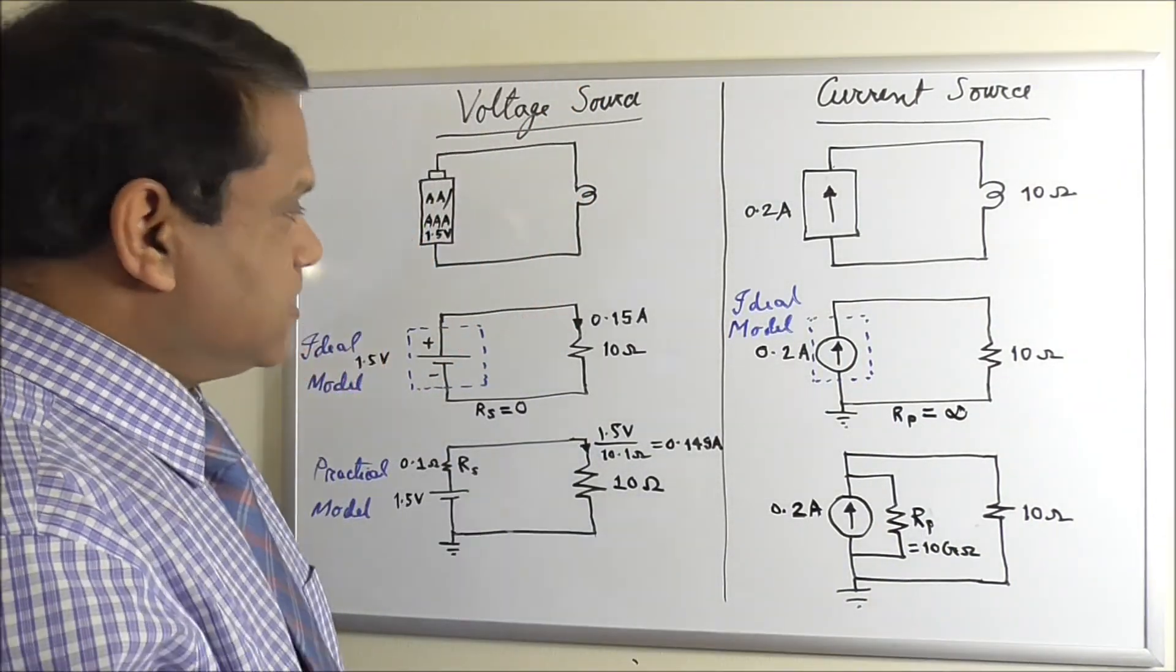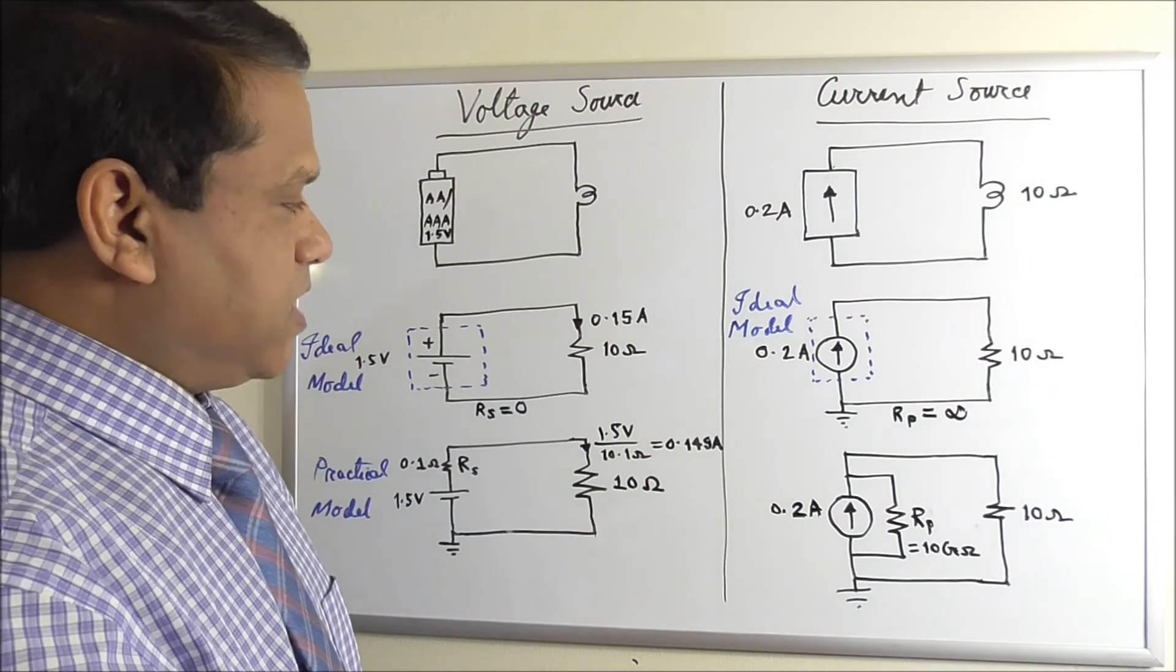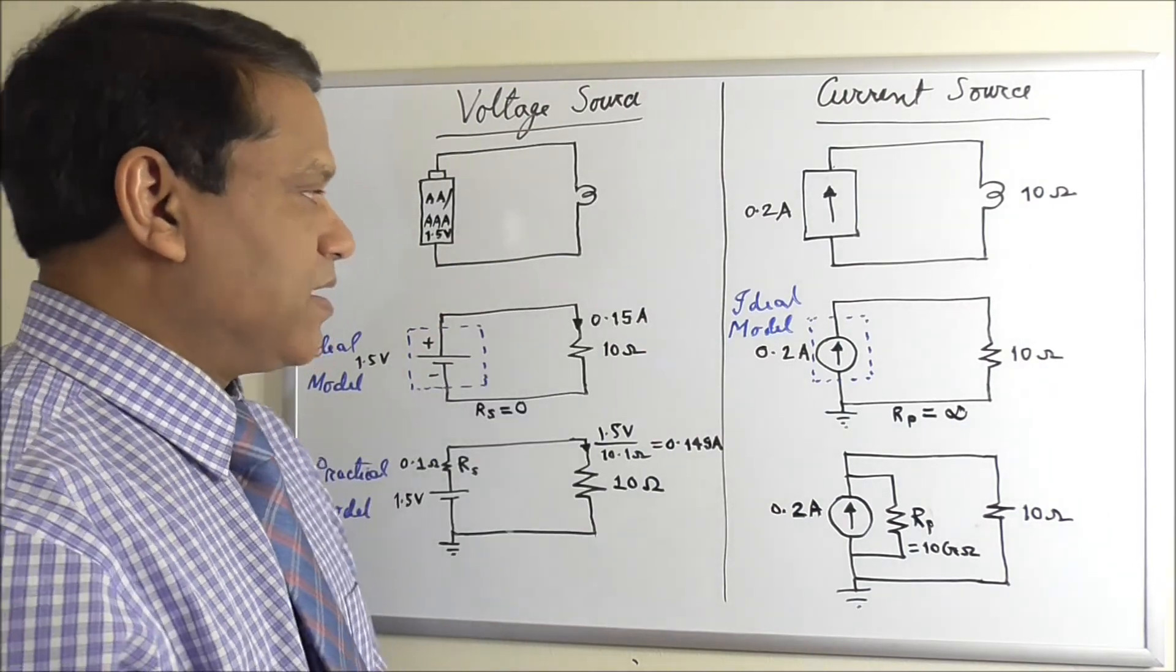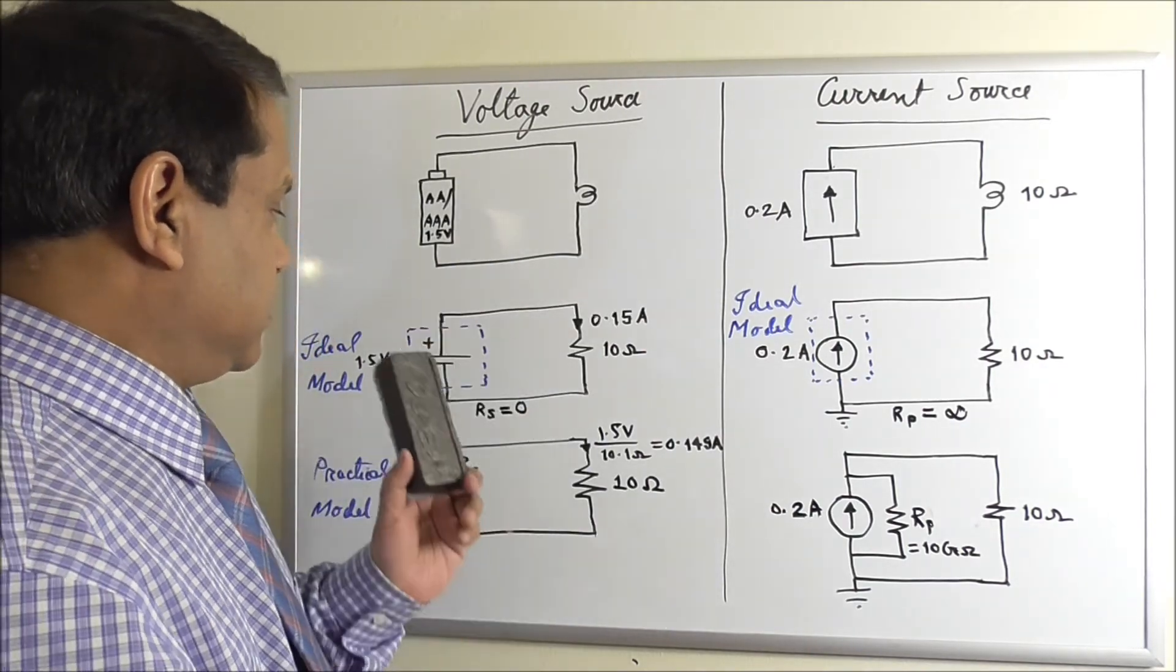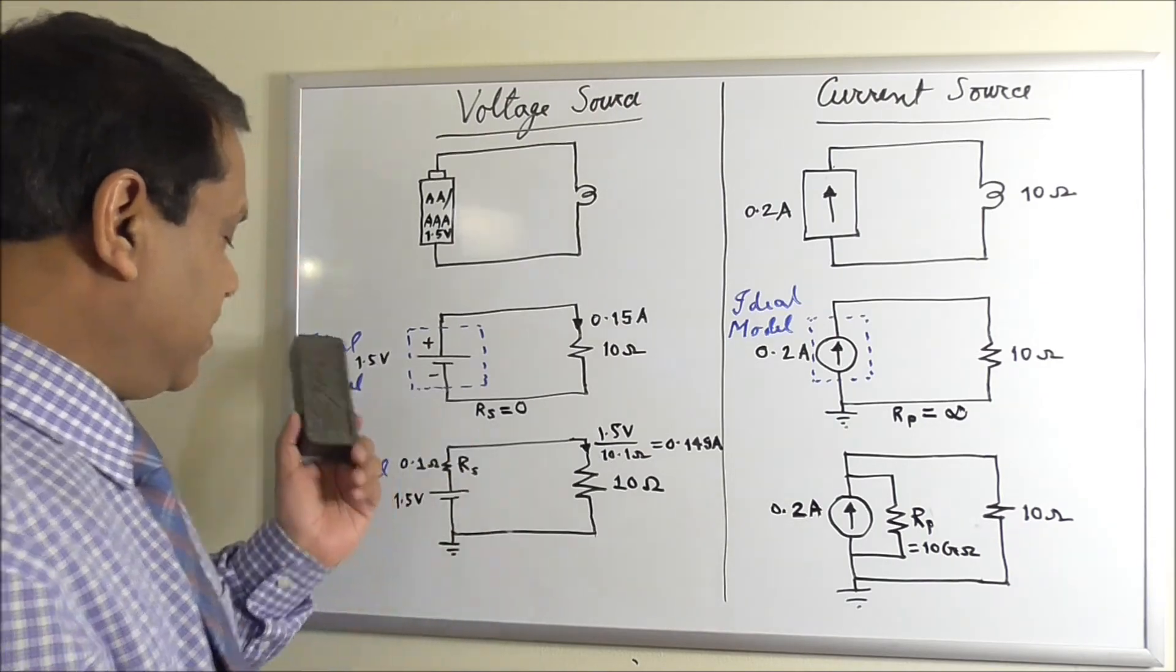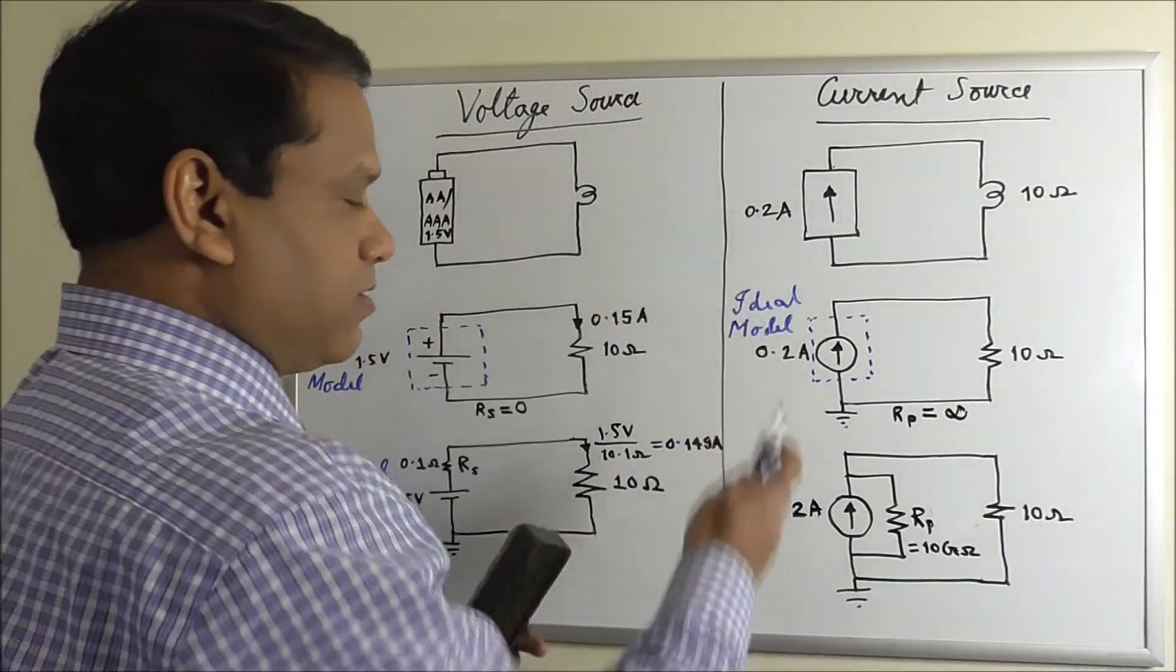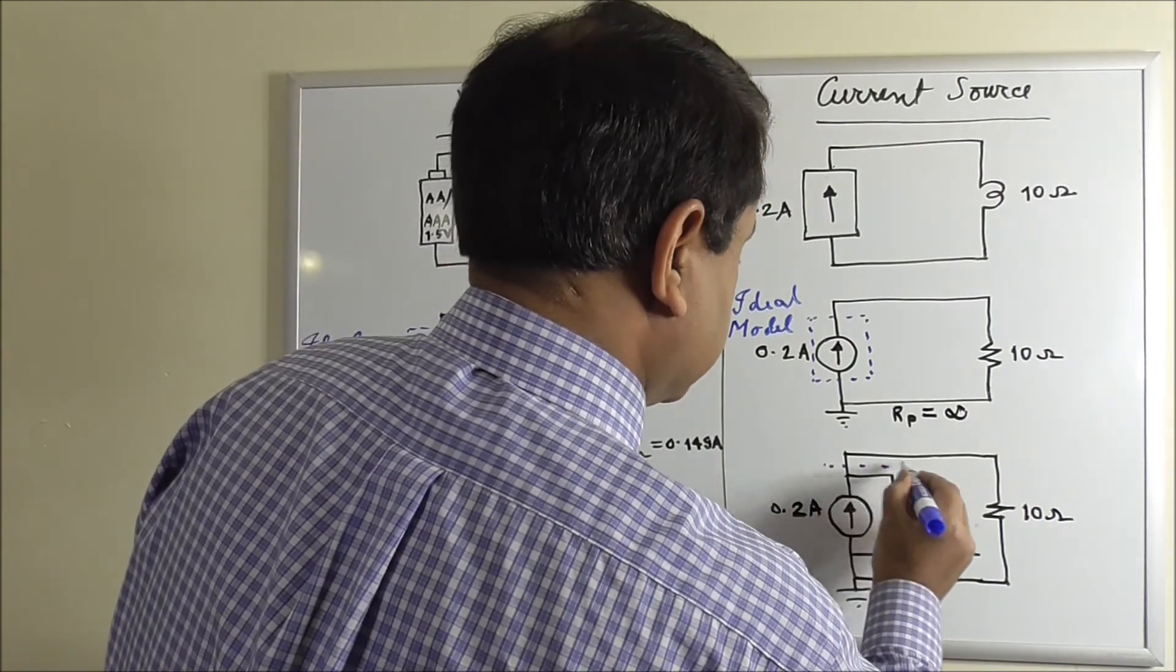So this is the two versions of sources, voltage source and current source. And we have discussed the circuit symbols, ideal model and practical model for the current source.